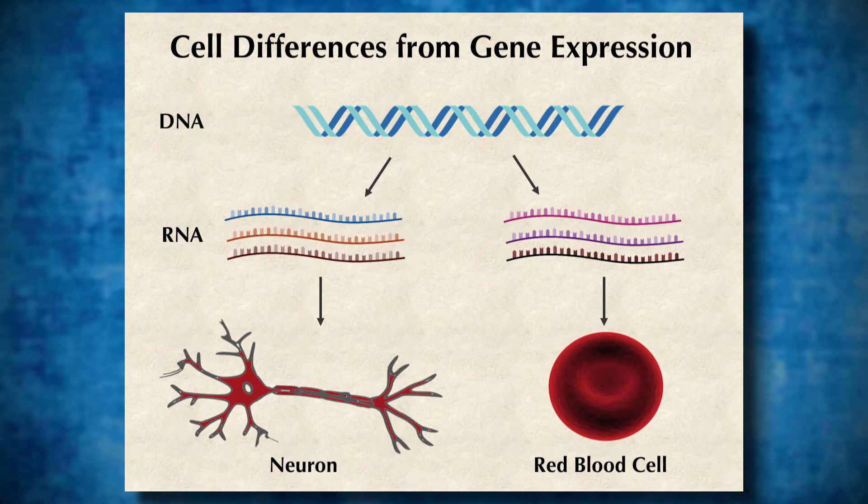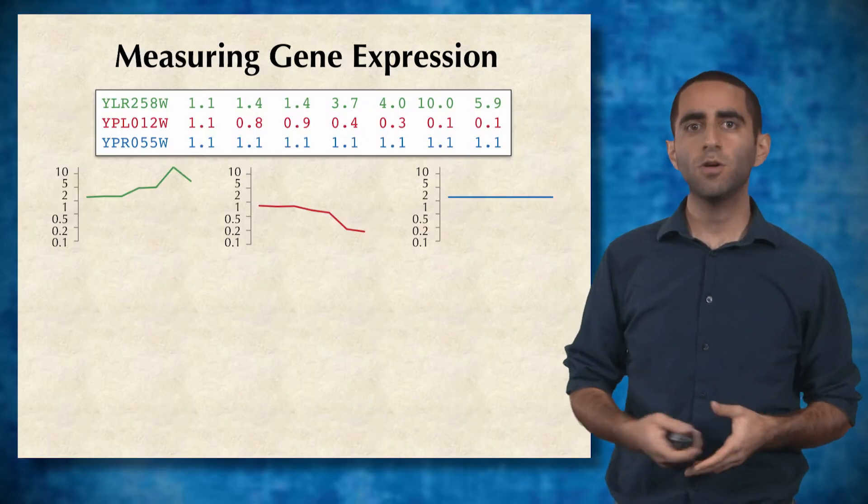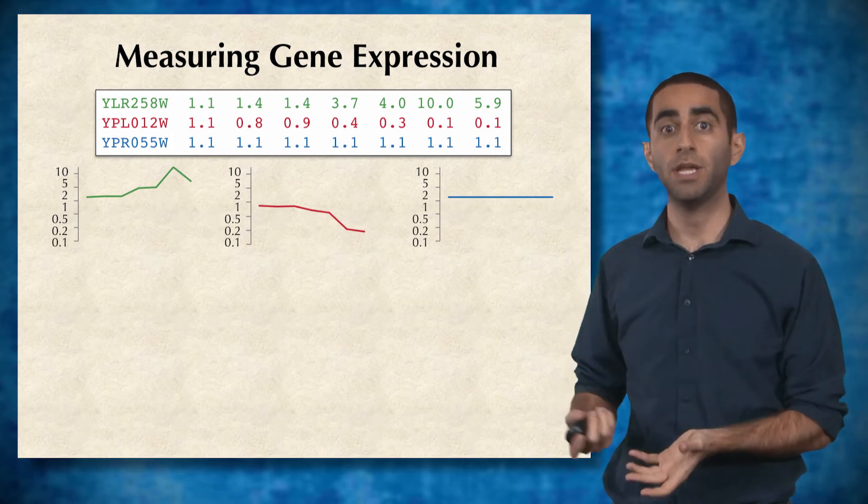To understand what makes cells look different, we need to quantify what genes are being expressed. The end goal for quantifying gene expression is to generate a gene expression matrix.